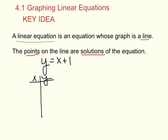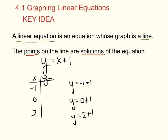I'm going to plug in three values: negative 1, 0, and 2. All I do is plug them in. y equals negative 1 plus 1, then plug in 0 for x, then plug in 2 for x. If you solve these for y, you get negative 1 plus 1 which is 0, 0 plus 1 which is 1, and 2 plus 1 which is 3. So right here you have three solutions — these are all solutions and also points.